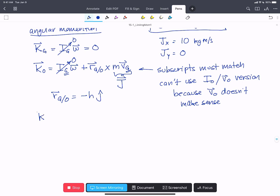And so we can write our KO as minus 0.6 meters, that's H J hat, crossed with 10 kilograms meters per second in the I hat. That's our J or our linear momentum.